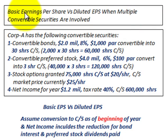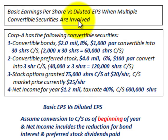What we're going to be going over here are basic earnings per share versus diluted earnings per share when multiple convertible securities are involved.